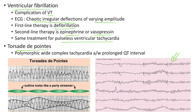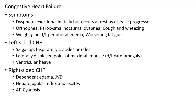Torsades de pointes involves polymorphic wide complex tachycardia associated with prolonged QT interval. This picture shows torsades de pointes — it literally means 'twisting of the points' and the ECG resembles a party streamer as you can see in this picture.